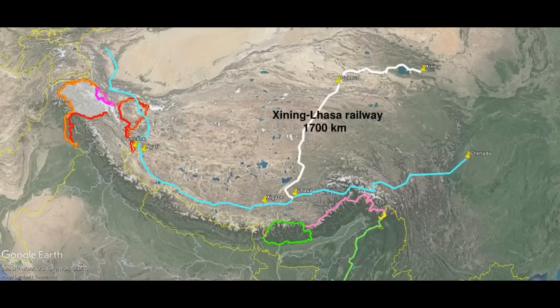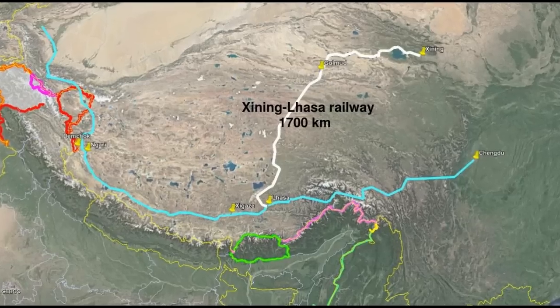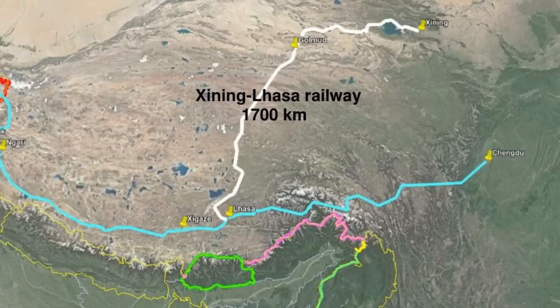Because road journeys are so difficult from China to Tibet, they built a railway. The railway line starts up north in Xining and moves westward then south to Lhasa — a 1,700-kilometer-long line. I'll talk about this railway later.